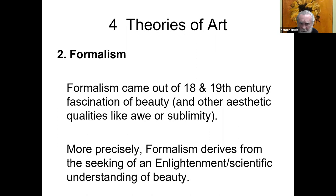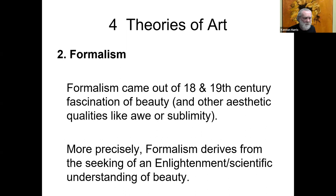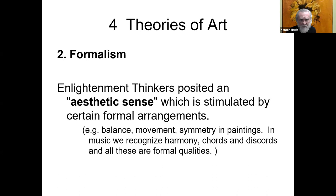The next view, formalism, is a break from that tradition. They were trying to locate the value of art in the work itself — not something extraneous like social utility, but something in the work of art. Formalism came out of the 18th and 19th century fascination with beauty and other aesthetic qualities like awe or sublimity, but more precisely it derives from seeking an Enlightenment, scientific understanding of beauty. The Enlightenment happened in the 17th and 18th centuries, with a fascination with science — Galileo, Newton — and so they wanted a scientific understanding of beauty and art.